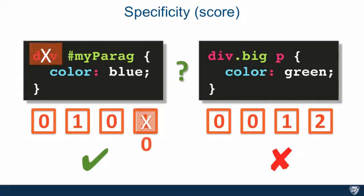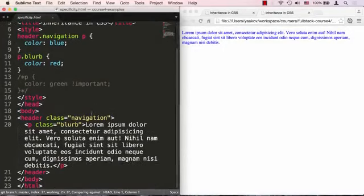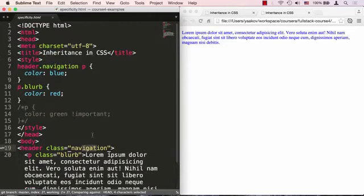So let's jump into our code editor and see this concept in action. Okay, so here we're in Sublime Text and we're looking at specificity.html. This is a pretty simple document - all it has is really one paragraph tag and it's sitting inside of a header tag with class navigation.